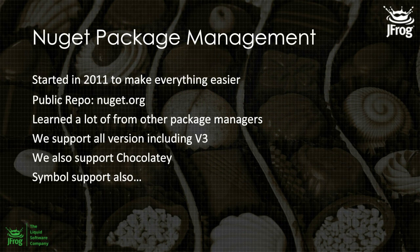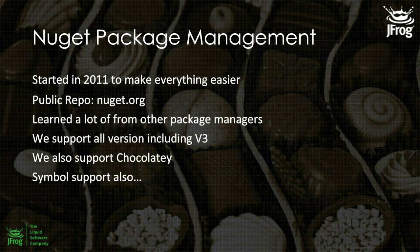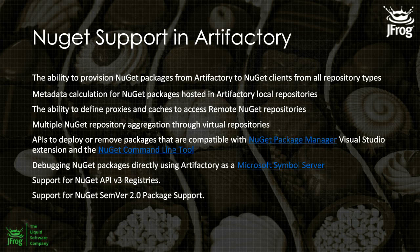NuGet came around in 2011 and its public available resource is nuget.org. One of the things we'll show today is that you can proxy requests to nuget.org through Artifactory. If you have a thousand developers all using the same library, it'll be stored once the first time a developer grabs it, cached in Artifactory, and all subsequent developers will pull from that cache.